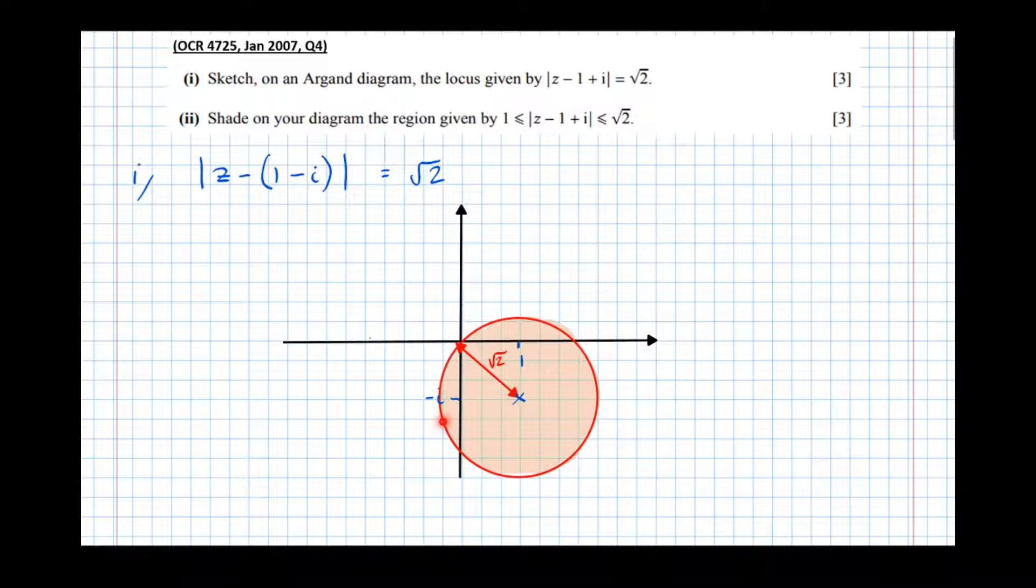Everything on the outskirts of this on the edge would be where the locus is equal to √2 as we saw in the first part. But actually less than or equal to √2 will be all points in the circle. But that's not what it asked us to do. It asked us to do between 1 and √2.